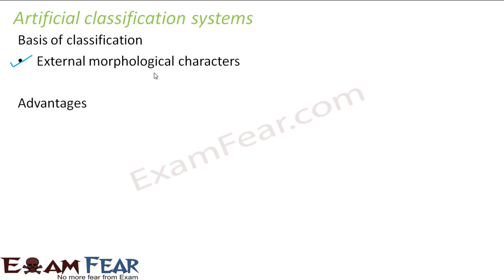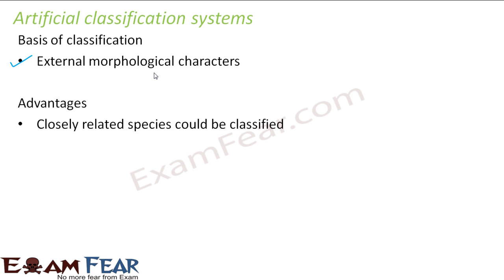Looking at the advantages of the artificial system: closely related species could be classified because their external appearances are quite different. For example, a small lotus plant and a cactus differ in many external features. So closely related species were grouped together, and some sort of classification was possible — something was better than nothing.